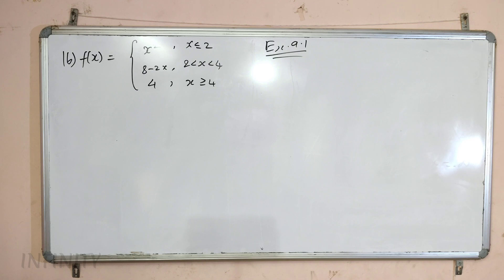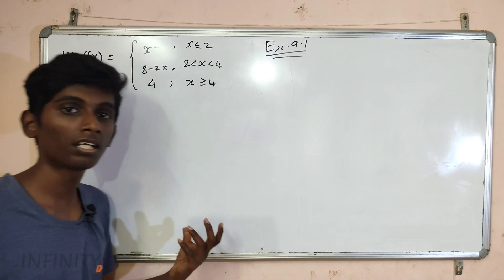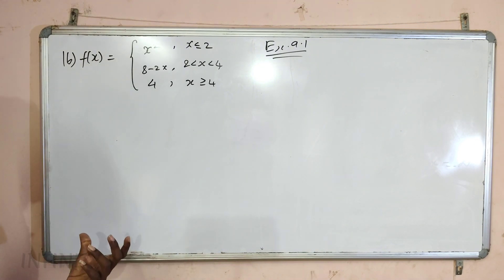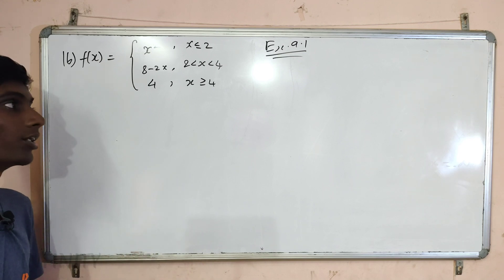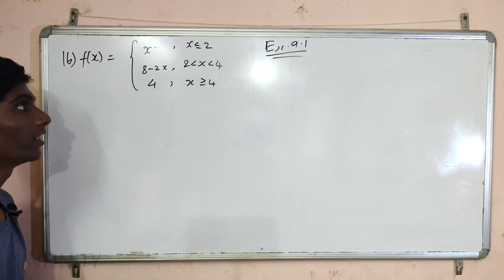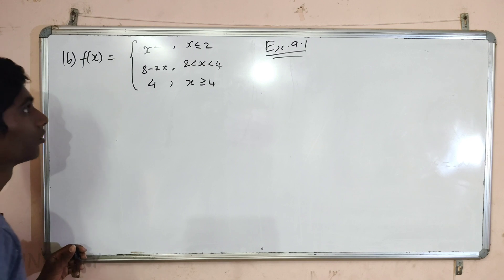Sketch the graph of f, then identify the values of x0 for which the limit as x tends to x0 of f of x exists. Let's sketch this function.